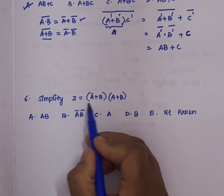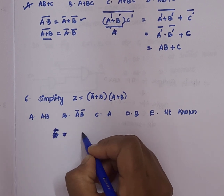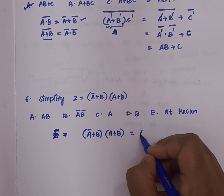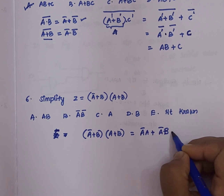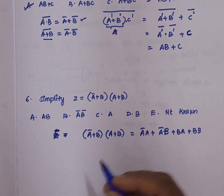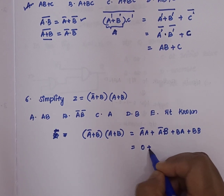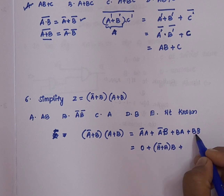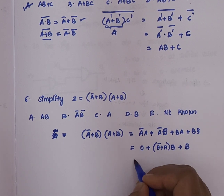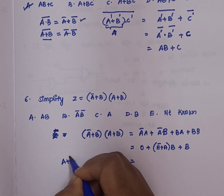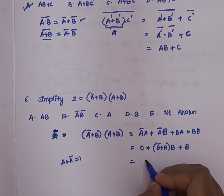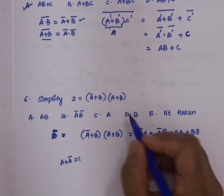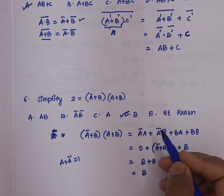Question 6: simplify z = (ā + b)(a + b). Expanding by multiplying each term: ā·a + ā·b + b·a + b·b. Now ā·a = 0 by Boolean rules. Taking b as common from the remaining two terms: b·(ā + a) + b·b. Since ā + a = 1, we get 1·b + b = b + b = b. So the answer is b, which corresponds to option D — the correct answer.